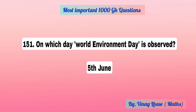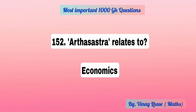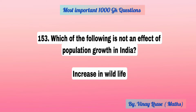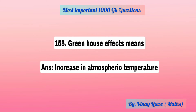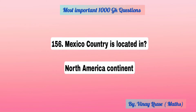On which day is World Environment Day observed? 5th June. Earth Shastra is related with economics. Which of the following is not an effect of population growth in India on present wildlife? The Bhagirathi River originates from Gangotri. Greenhouse effect means increase in atmospheric temperature. Mexico is located in the North America continent.